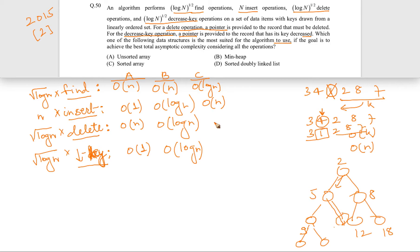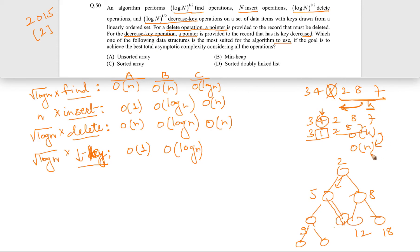Delete in a sorted array also takes O(n): after deleting an element, all remaining elements must be shifted to fill the gap, and in the worst case (deleting the first element) this is O(n).